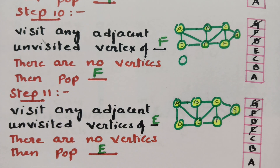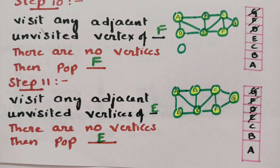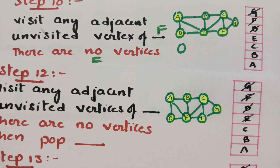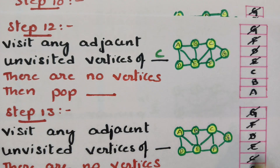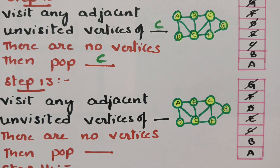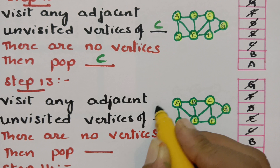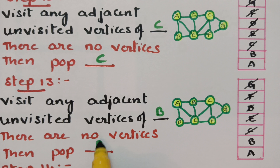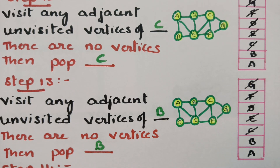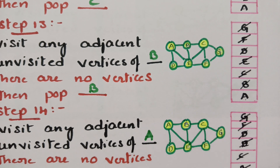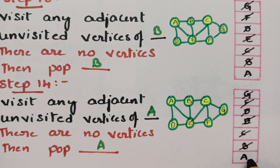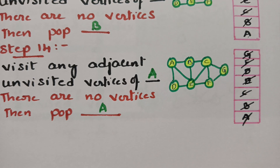From the top element, we now visit C. Visit any unvisited vertices of C — there are none, so pop C. The top element is now B. From B, visit any unvisited vertices — there are none, so pop B. The top element is now A. Visit any adjacent unvisited vertices of A — there are none, so pop A. The stack is now empty.